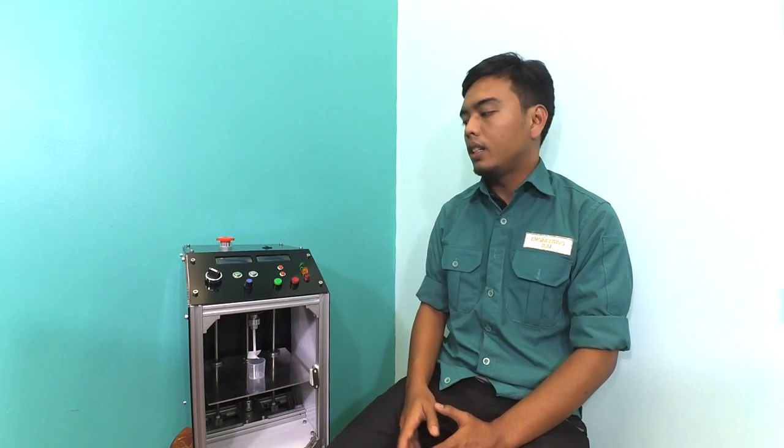Introducing the stirrer machine. This machine is able to mix a small scale volume of mixture as low as 1 ml. This machine is also suitable to mix high viscosity solutions.